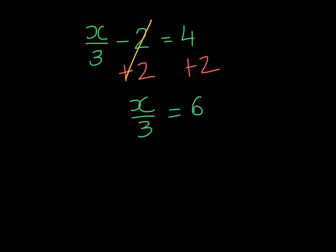At this point, we have a one-step equation. X is being divided by 3. The inverse of dividing by 3 is to multiply by 3 on both sides. Remember, 3 divided by 3 will give me 1 with x, and on the right-hand side, 6 times 3 is 18.